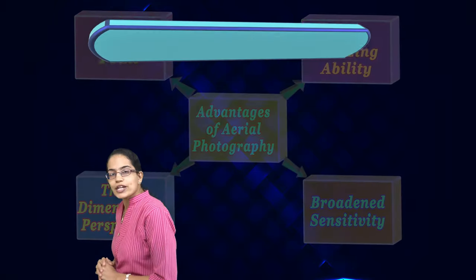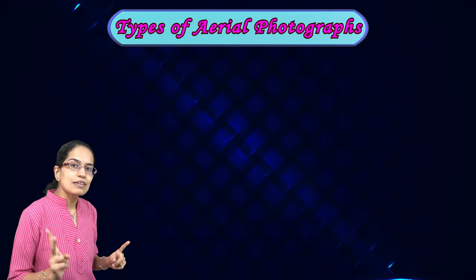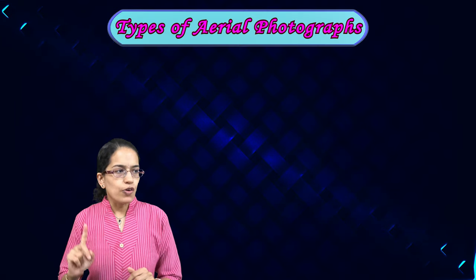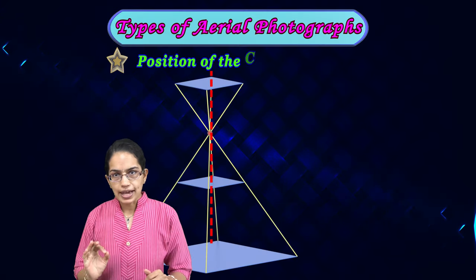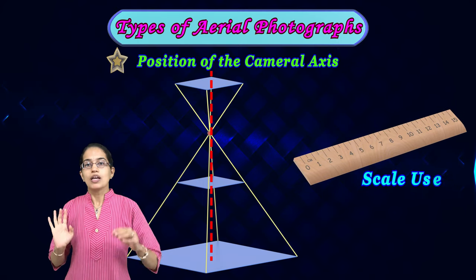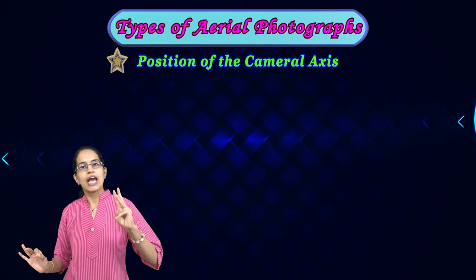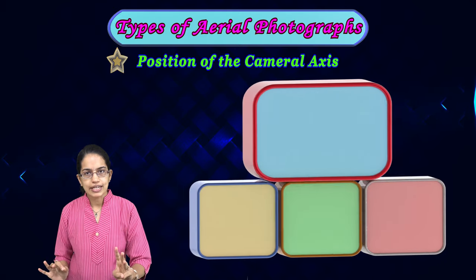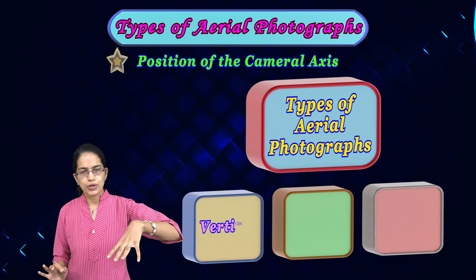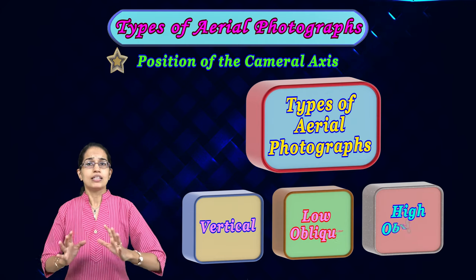The fourth advantage is a three-dimensional perspective. Since photographs are taken at uniform intervals over a given space, you have a better three-dimensional perspective. Those are the basic advantages. Now, what are the types of aerial photographs? These types depend on two things: first, the position of the camera axis, and second, the scale used.